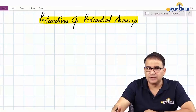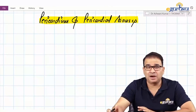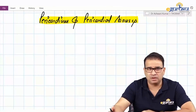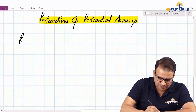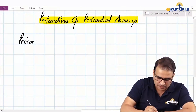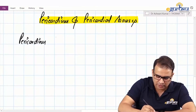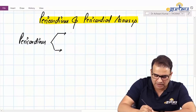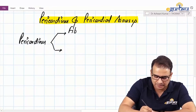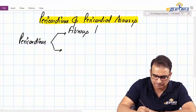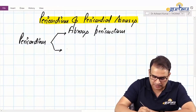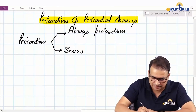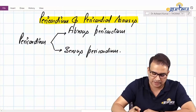Before moving to the heart, let us first talk about the pericardium and then pericardial sinuses — something which holds good clinical importance. When we talk about pericardium, the covering of the heart, there are two types: we have a fibrous pericardium and a serous pericardium.